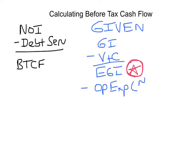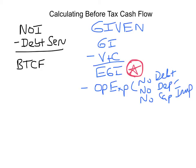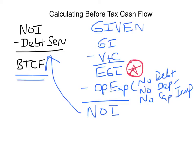There's no debt service, no depreciation, and no capital improvements included in the operating expenses. When you do that, you calculate net operating income. Then you back out debt service and you get before tax cash flow.